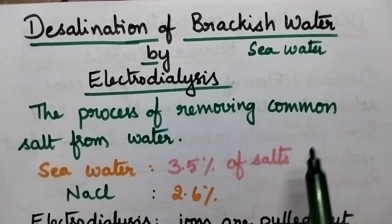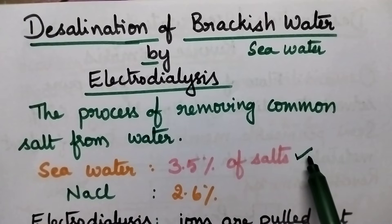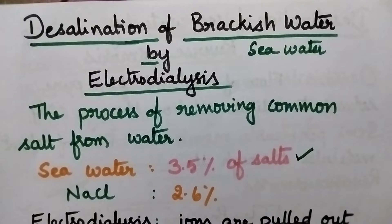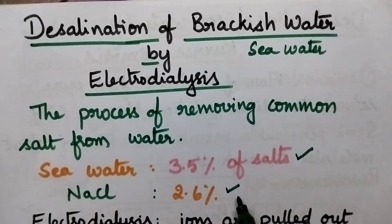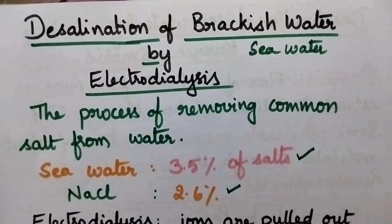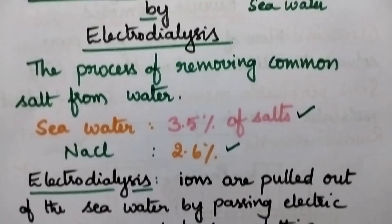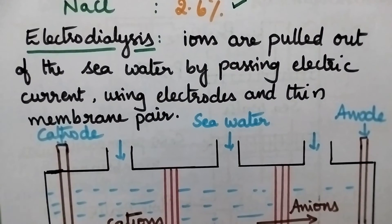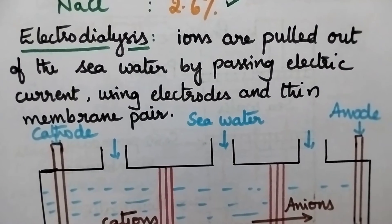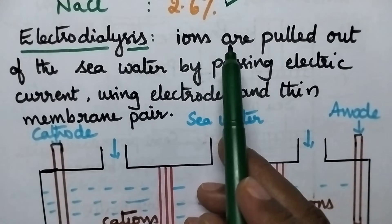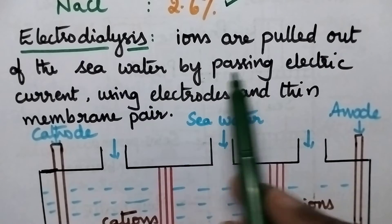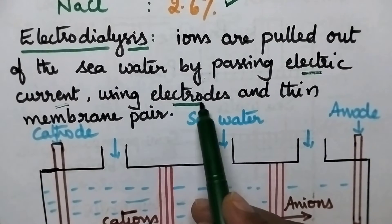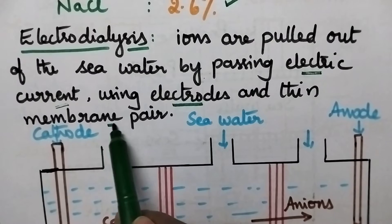Sea water has a peculiar taste and is called brackish water. In particular, sea water contains 2.6% of sodium chloride. Here we are going to discuss electrodialysis. In this electrodialysis process, the ions are pulled out of sea water with the help of current, electrodes, and thin membranes.